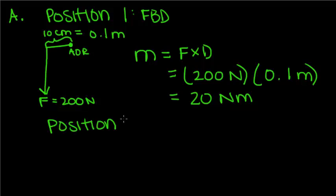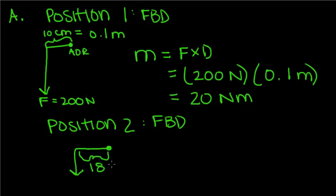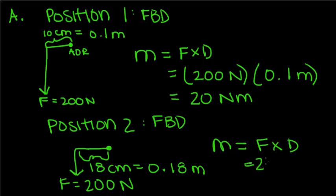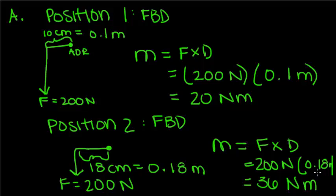For position 2, we're going to draw another free body diagram. We have an angle of rotation at a different distance of 18 centimeters, which is 0.18 meters, and a force equal to the same constant 200 newtons. Using the same equation, moment equals force times distance: 200 newtons times 0.18 meters gives us 36 newton meters as our moment about axis A in the second position.